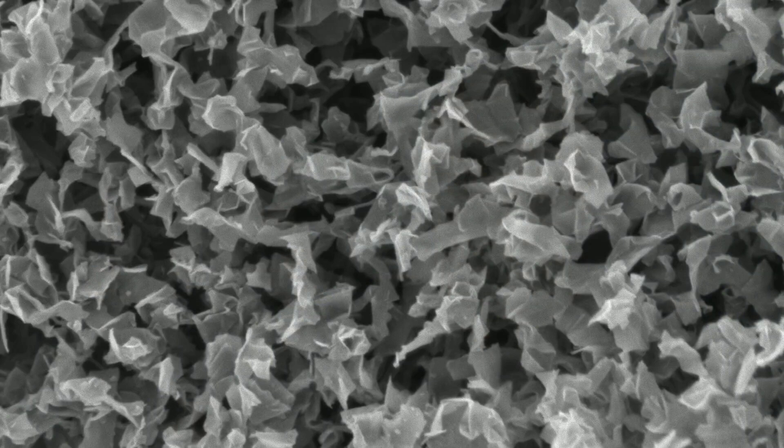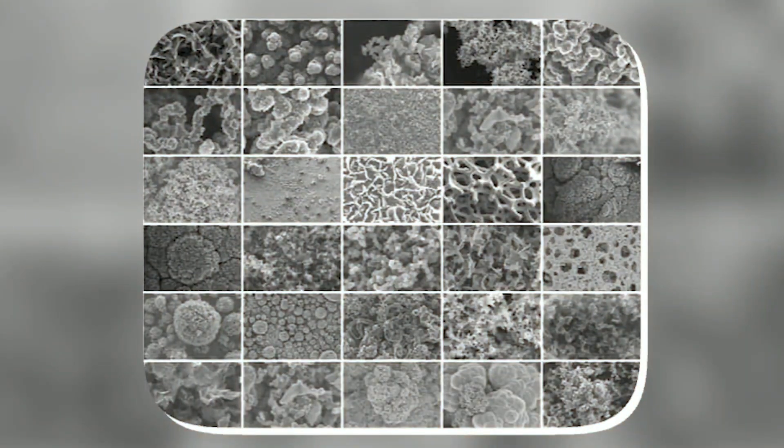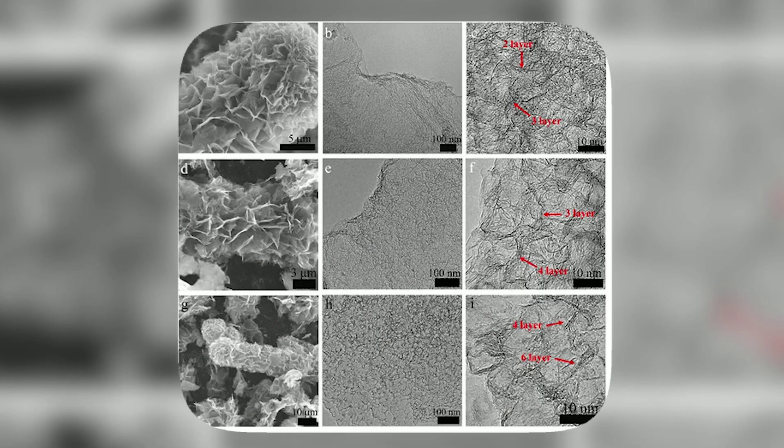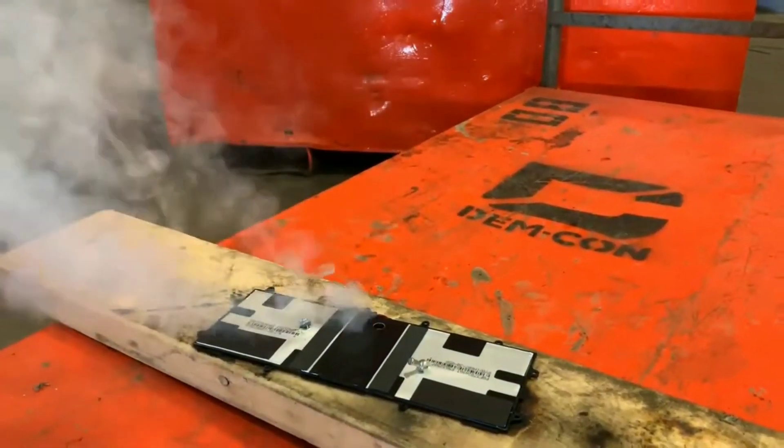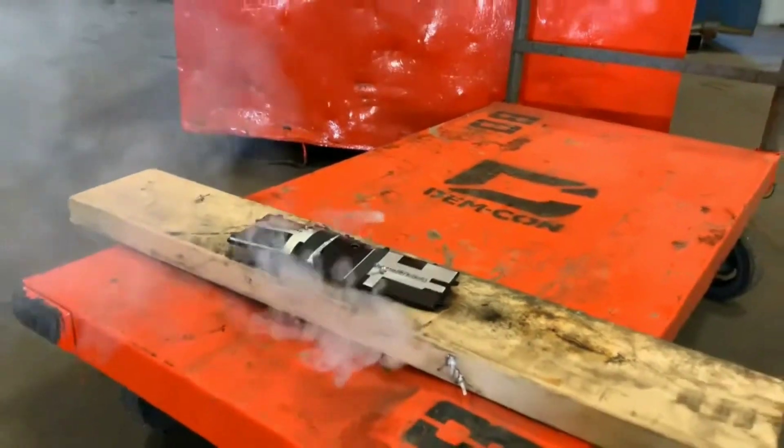Dendrite formation is when tiny spikes of lithium metal grow on the surface of the anode during charging. These spikes can pierce through the separator that separates the anode from the cathode and cause a short circuit or even a fire.